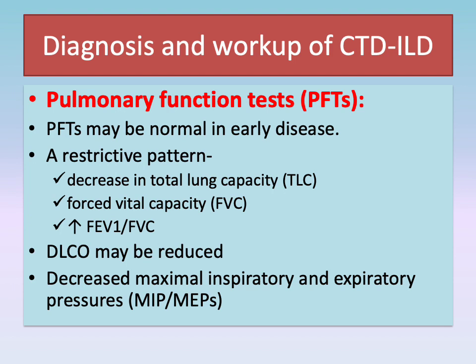It is important to note that pulmonary function tests may be normal in early disease. A restrictive pattern with a decrease in total lung capacity and reduced forced vital capacity, with normal or high forced expiratory volume in one second and an increased FEV1 to FVC ratio, is often seen. Diffusing capacity for carbon monoxide may be reduced due to pulmonary vascular disease. Decreased maximal inspiratory and expiratory pressures may be noted in patients with idiopathic inflammatory myositis and respiratory muscle involvement.